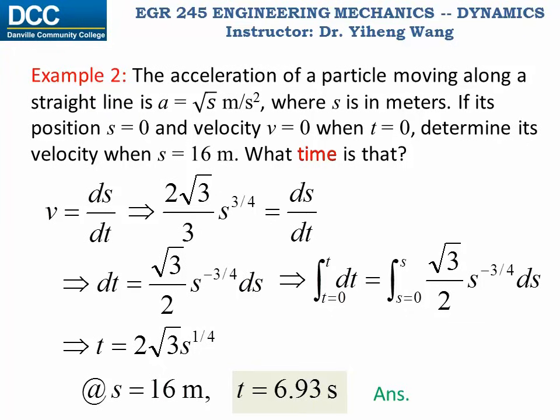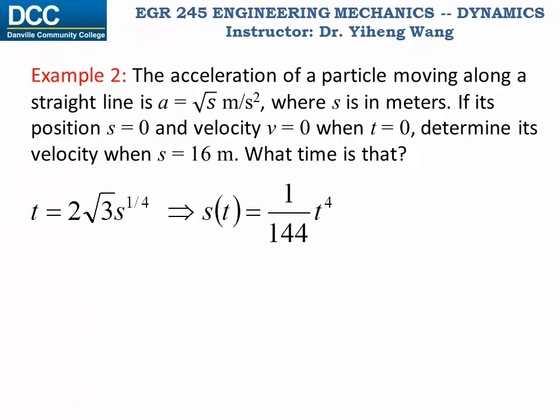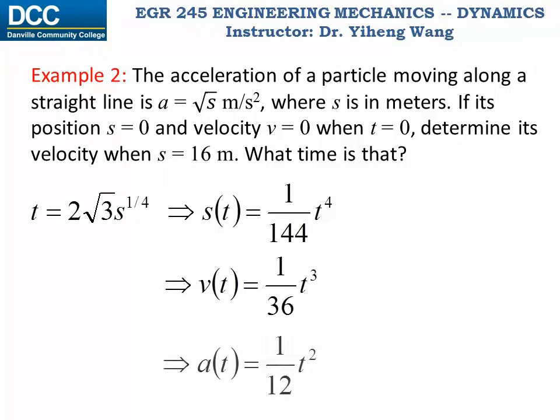Normally we would rewrite it to be position as a function of time, since time is always independent. Therefore, after rearrangement we get the position as a function of time. Or we can also get velocity as a function of time, or the acceleration as a function of time. As you can see, acceleration does equal the square root of position s.